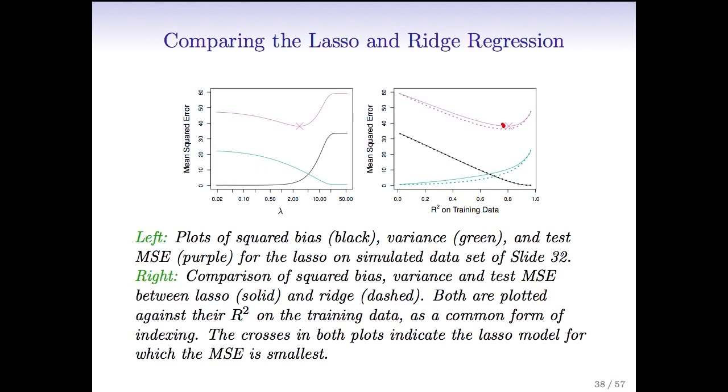And one thing we should mention is on this right-hand panel, the x-axis is something we haven't seen before, which is the r-squared on the training data. And the reason we have that x-axis is because in this figure on the right-hand side, we're plotting both ridge regression and the lasso. So it wouldn't make sense to show ridge regression and the lasso with lambda on the x-axis, because the lambda means two different things for those two models. So when we look at r-squared on the training data on the x-axis, that's kind of a universally sensible thing to measure, regardless of what the type of model is.